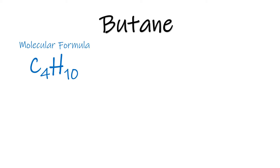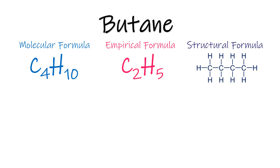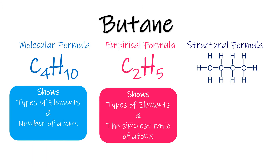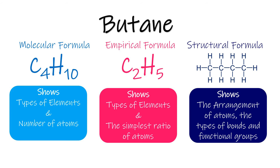Now we have three different types of formulas for butane: the molecular formula, the empirical formula, and the structural formula. The molecular formula consists of the chemical symbols for the constituent elements followed by numeric subscripts describing the number of atoms of each element present in the molecule. The empirical formula represents the simplest whole integer ratio of atoms in a compound. The structural formula shows the arrangement of atoms in the molecule, and it consists of symbols for the atoms connected by short lines that represent chemical bonds.